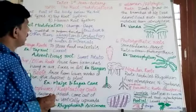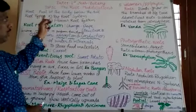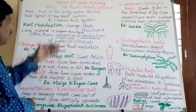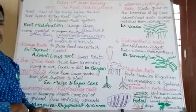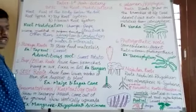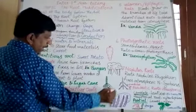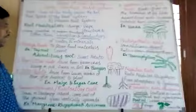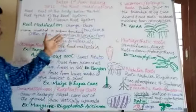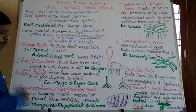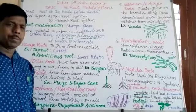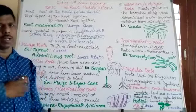For public examinations, they will ask about root and its different kinds of modifications. There are eight types of root modifications, and they will ask about any six of them along with examples and diagrammatic representations. Diagrams carry three marks and the total essay question carries five marks. This is very important for first-year intermediate public examinations. If you like this video, please subscribe to my channel. Thank you.